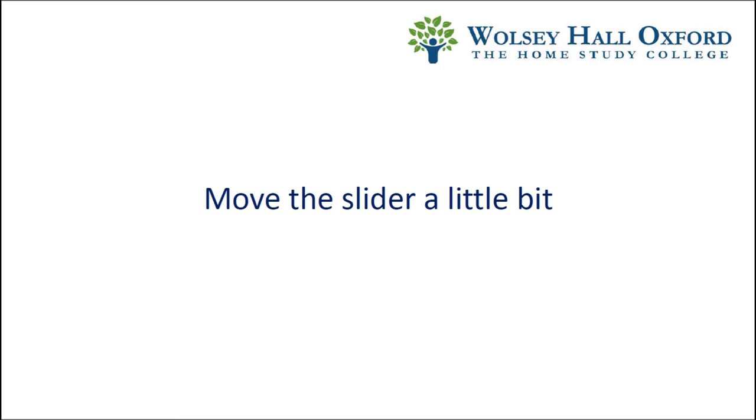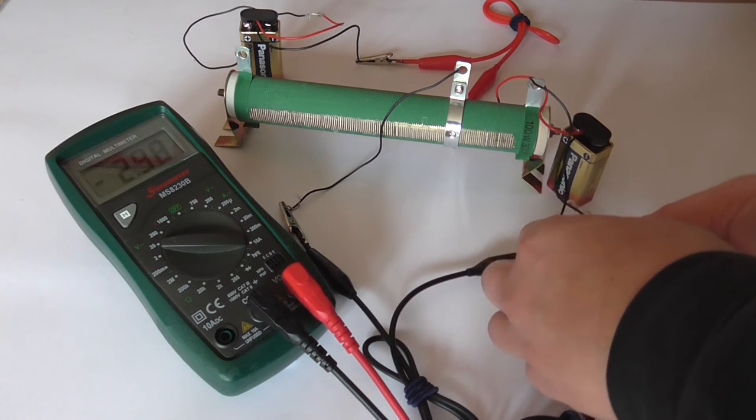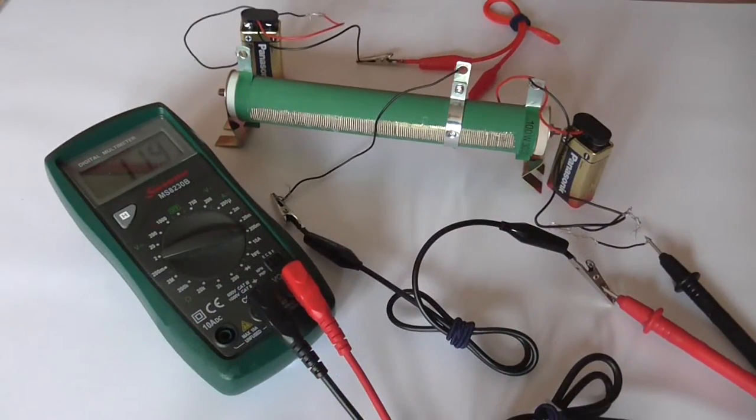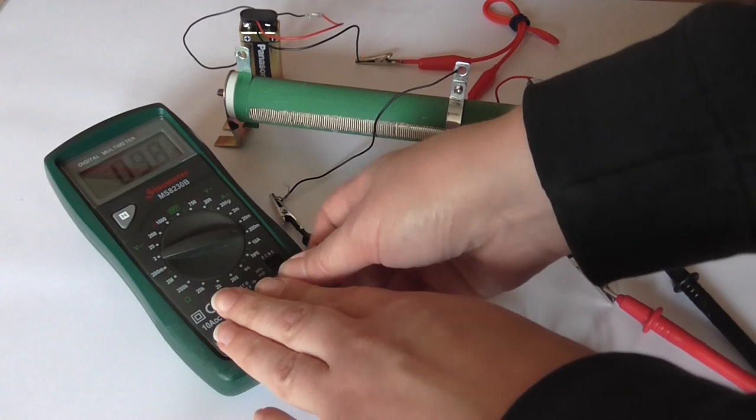Moving the slider a bit brings it up to 3.07 volts. When we put the multimeter in series, we find the corresponding current. I'm pushing it down to make sure there's a good connection.